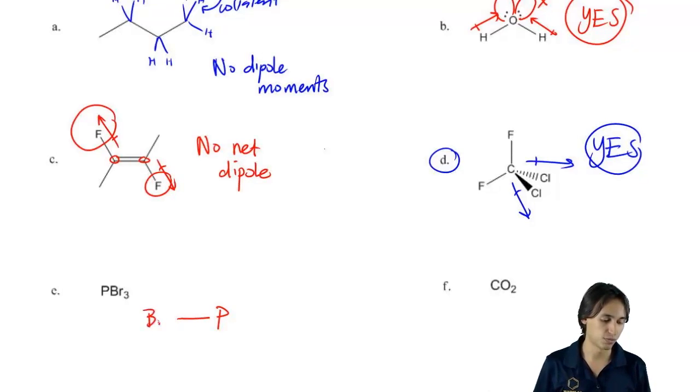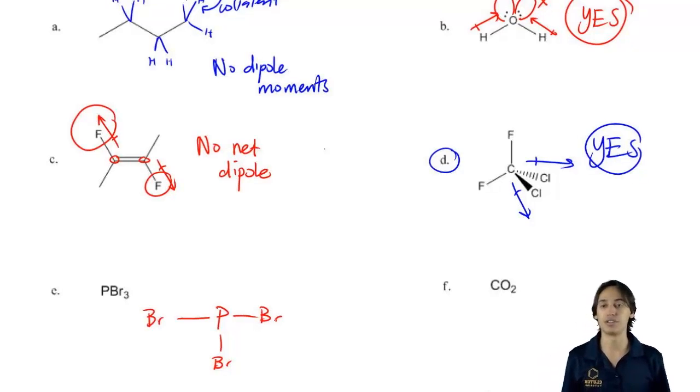So I'm just going to make three bonds to bromine and then I'm going to add in all the electrons to fill the octets.